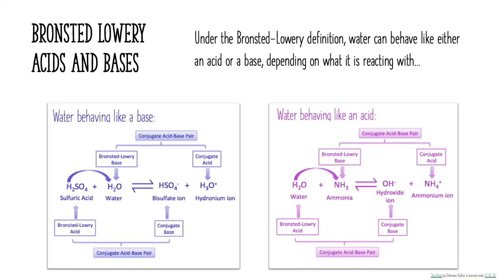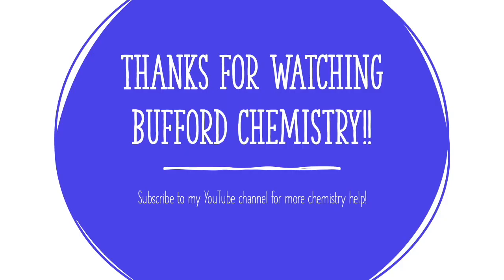The sulfuric acid is giving away a hydrogen ion and is left as the bisulfate ion. That's our conjugate base because it now has the ability to take a hydrogen back — it could be a hydrogen ion acceptor. That is our second conjugate acid-base pair. Thanks for watching Buffered Chemistry. Subscribe to my YouTube channel for more chemistry help.